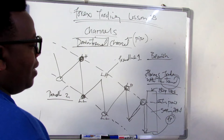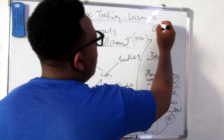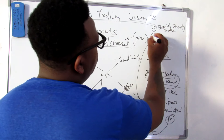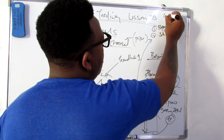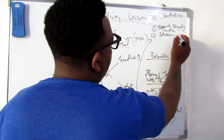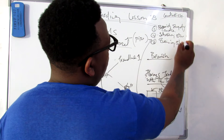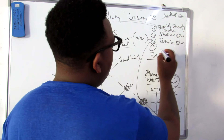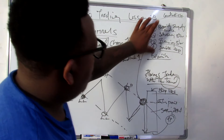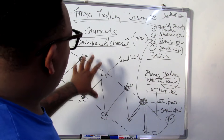Another thing you need to understand is the confirmation signals we get to look into at trendline one. One of which is the bearish engulfing candle. Two, you might look for a shooting star. We also look for the evening star. These are candlestick concepts we already handled in lessons five and six. And number four, there's another concept I'll be introducing as you proceed — you could be looking for a double top. If you get to see any of these at the upper trendline, these are very good entry positions for you to sell downwards.